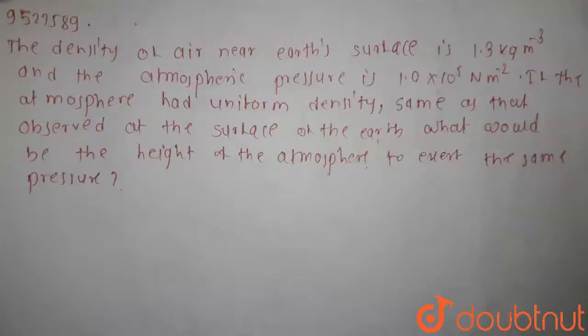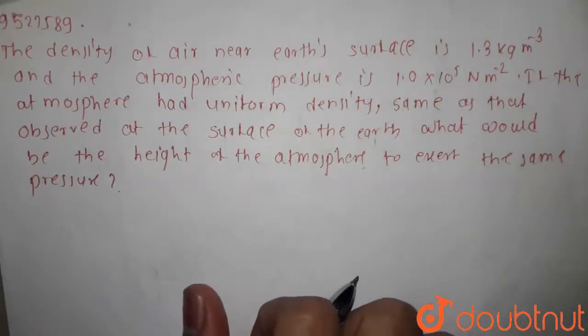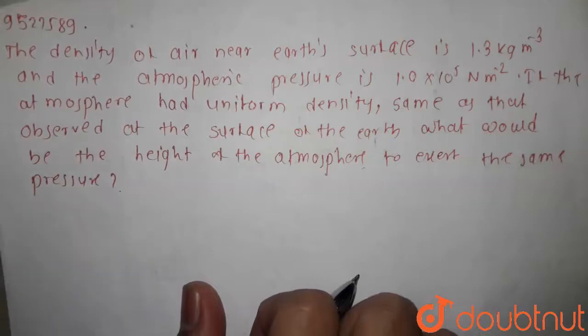So question is, the density of air near Earth's surface is 1.3 kg per meter cube, and the atmospheric pressure is 1 into 10 to the power 5 Newton per meter square. If the atmosphere had uniform density same as that observed at the surface of Earth, what would be the height of atmosphere to exert the same pressure?